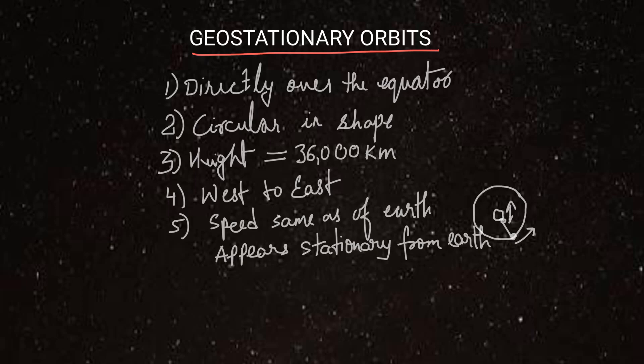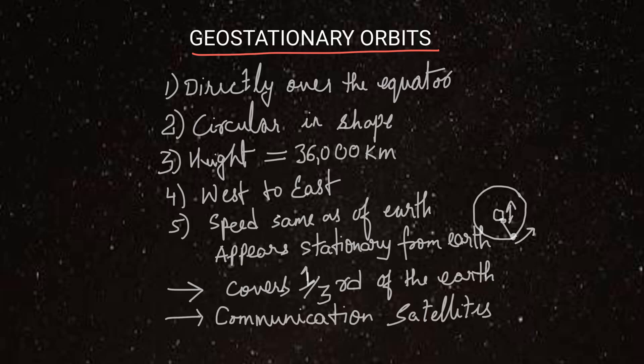Next is that one geostationary satellite covers one third of the earth. Hence, three geostationary satellites are required to cover whole of the earth. Geostationary satellites are mainly used for communication purposes - that is for meteorological and weather forecasting, satellite TV, satellite radio and other types of global communication.